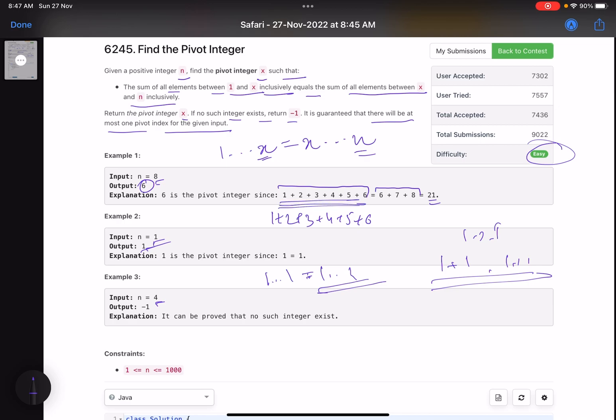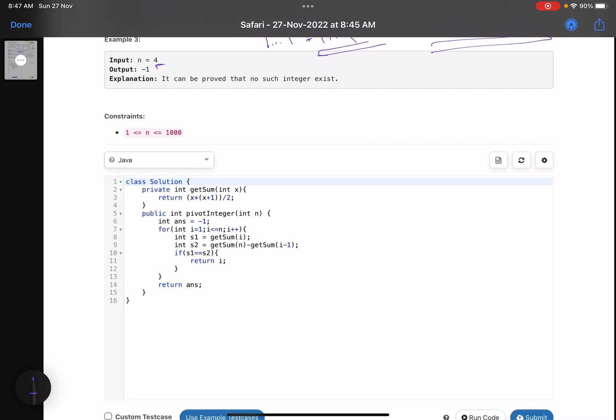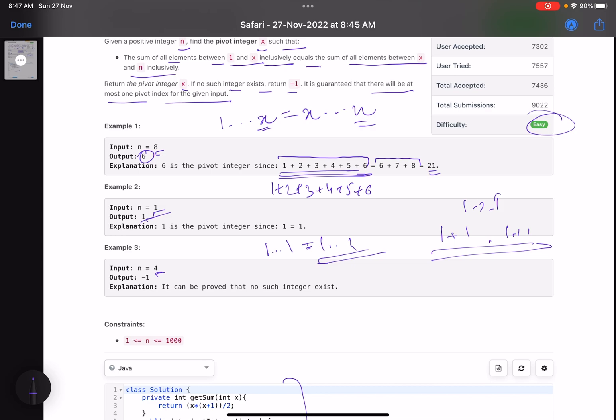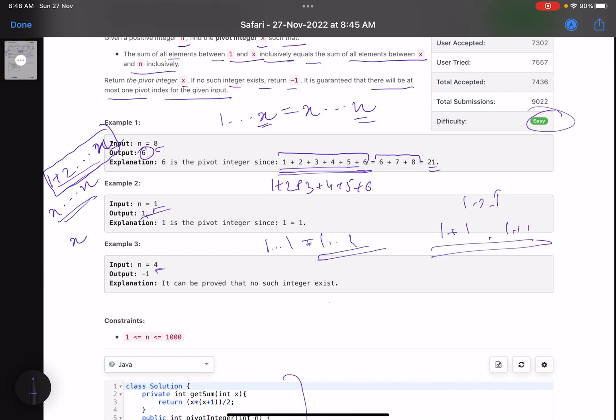Let's see what we need to observe. This is my solution. We need to find sum of two sets of contiguous numbers and compare them. If the pivot integer is x, I need to find the sum of 1 plus 2 dot dot dot till x, and the second sum from x to n. I know the formula for the sum of first x numbers: x into x plus 1 divided by 2. To calculate the first sum, I can use x into x plus 1 by 2.